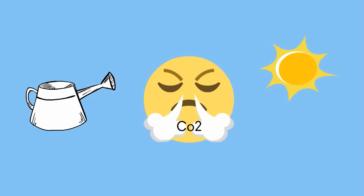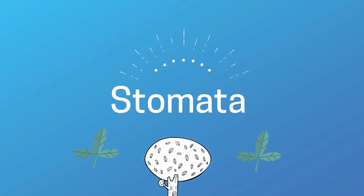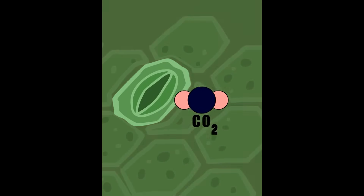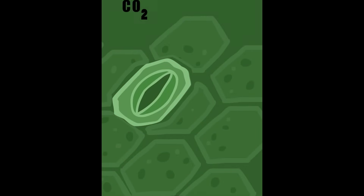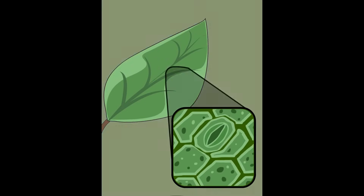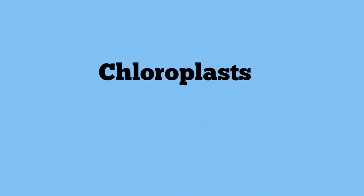Here's how it works. Plants have small openings called stomata. Carbon dioxide from the atmosphere enters the plants through the stomata. Within each plant cell are small organelles called chloroplasts. Here's a short video of chloroplasts.